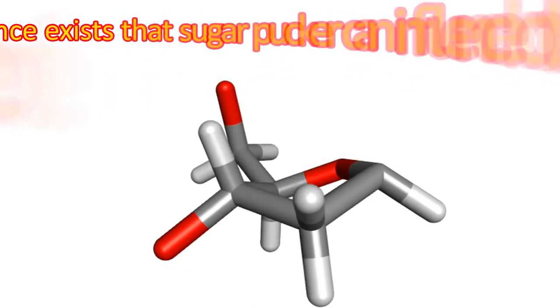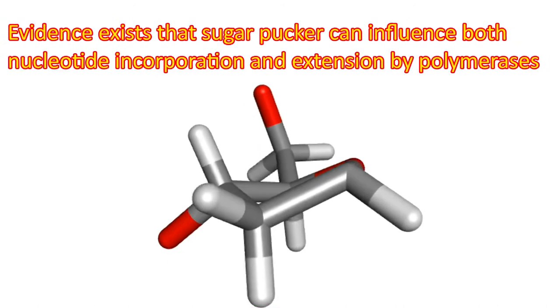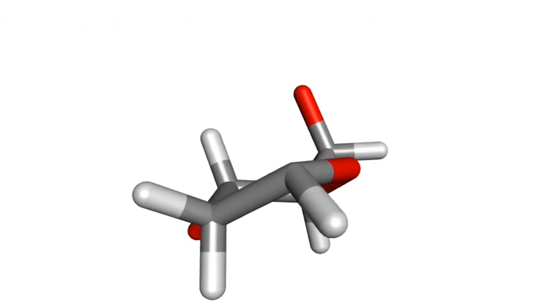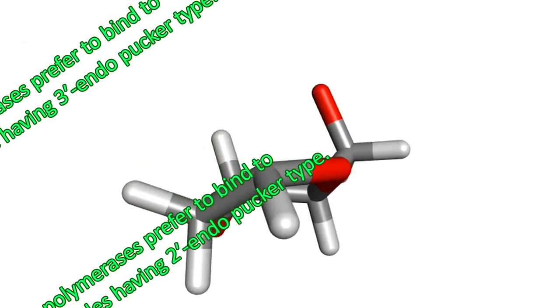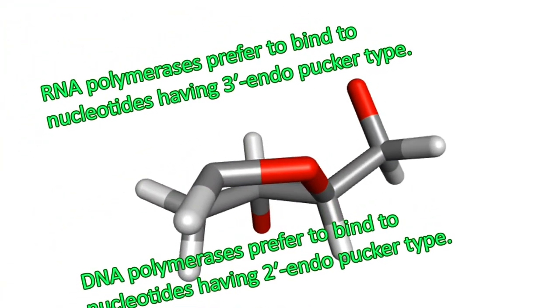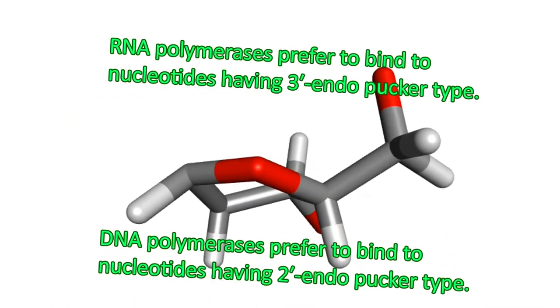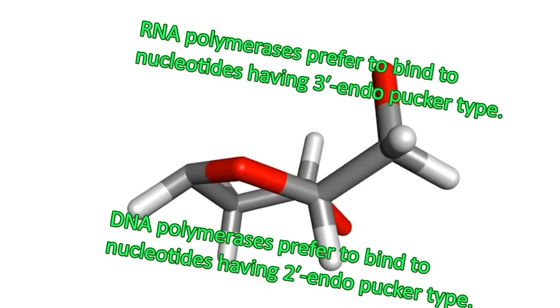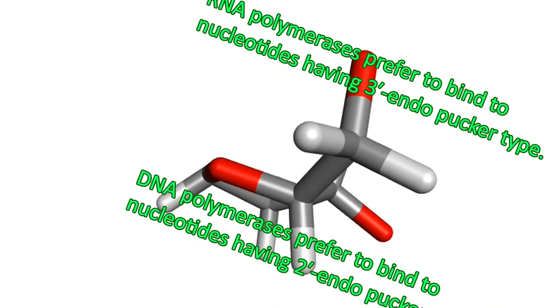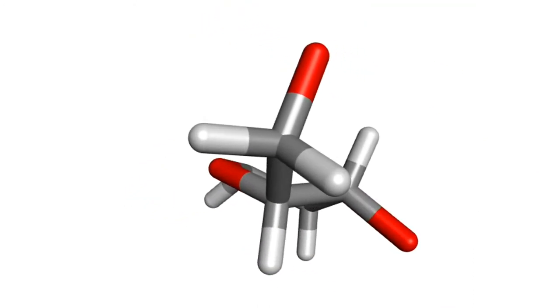Evidence exists that sugar puckering can influence both nucleotide incorporation and extension by polymerases. Nucleotides that are constrained to a 3' endo conformation are preferentially incorporated by RNA polymerases. Conversely, nucleotides that prefer the 2' endo pucker are preferentially incorporated by DNA polymerases. So you see, sugar puckering is important.